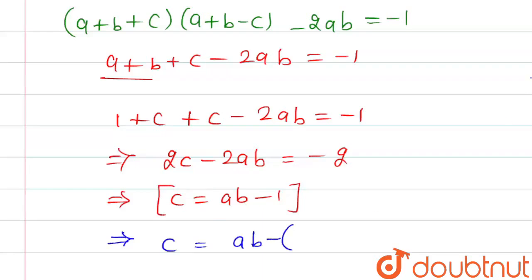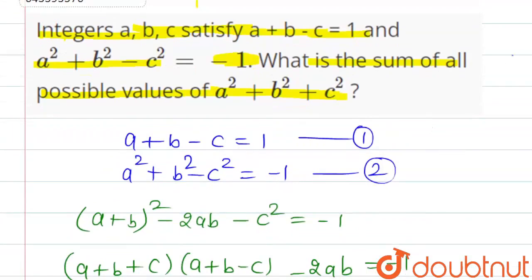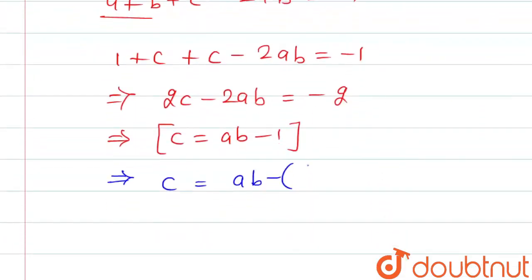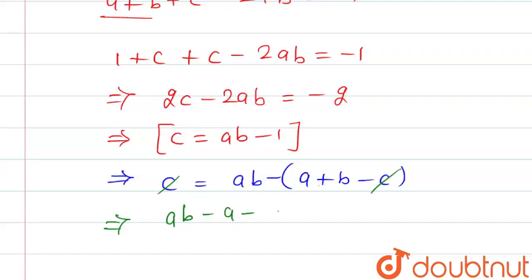Working through the algebra further, after cancellation on both sides, we arrive at ab minus a minus b equal to 0.